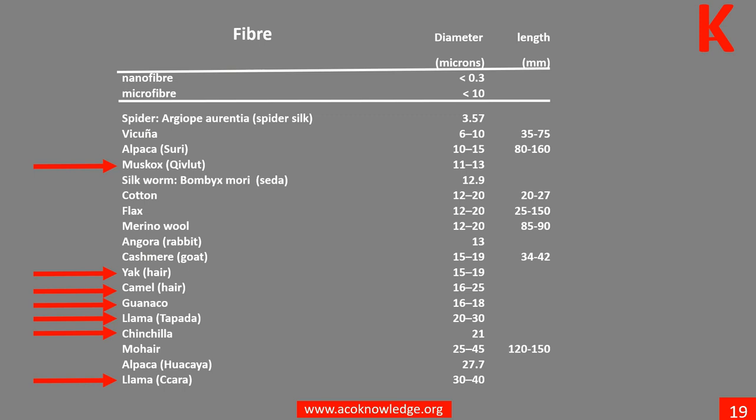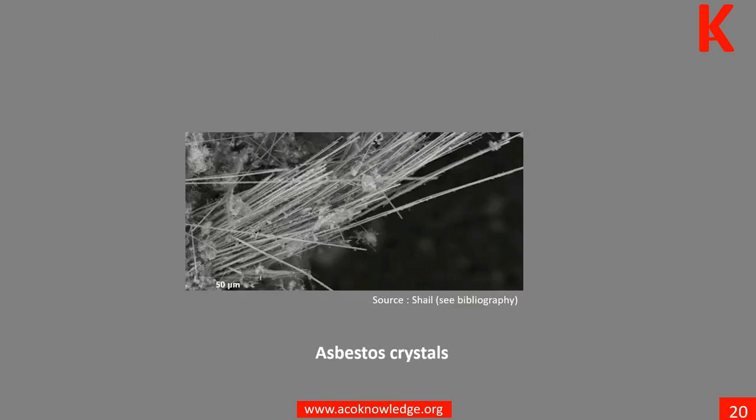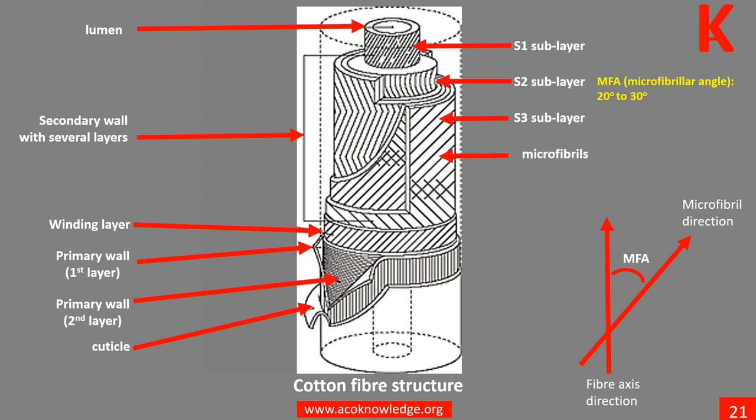This table compares the diameters of most natural fibers, including some less common ones such as muskox, yak, camel, and a few others. Learn more in Unit 7. Asbestos is a set of six naturally occurring silicate minerals. Learn more in Unit 7.